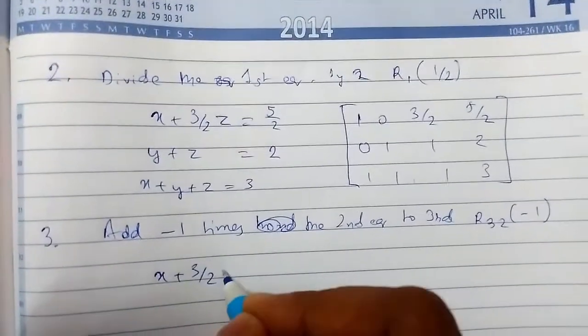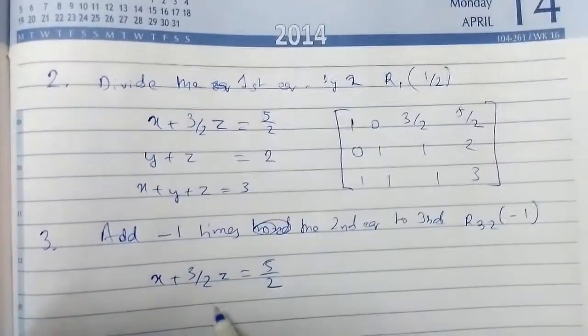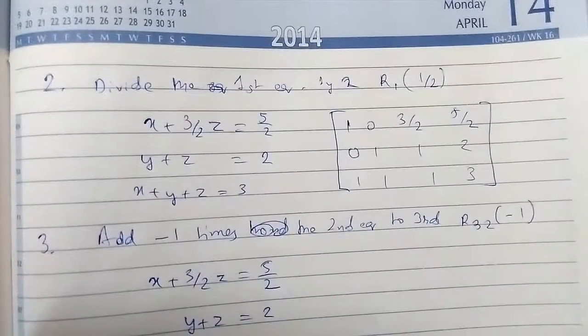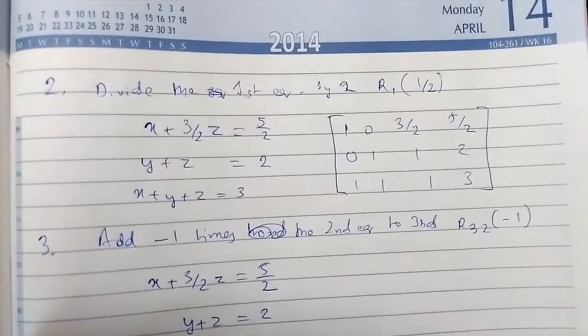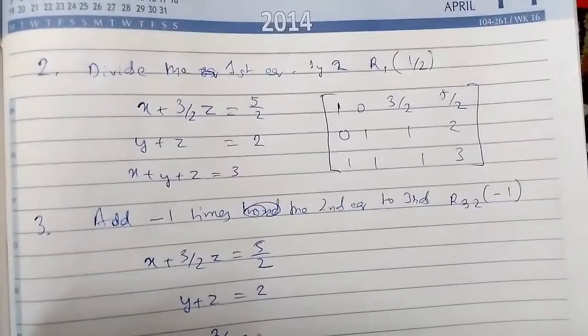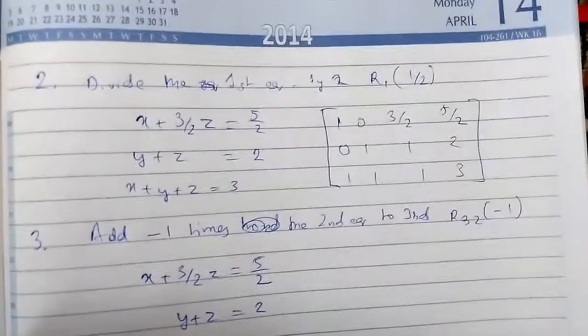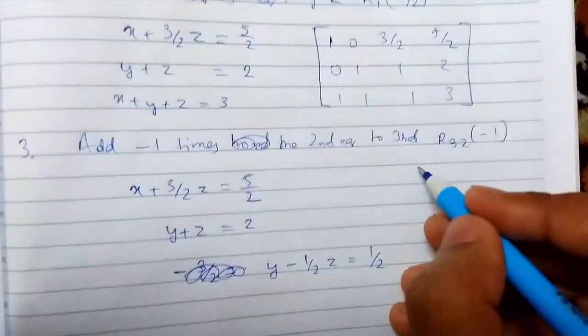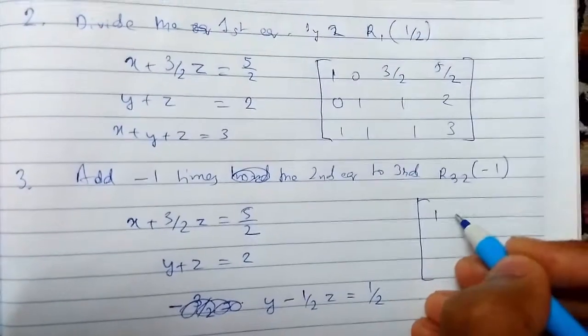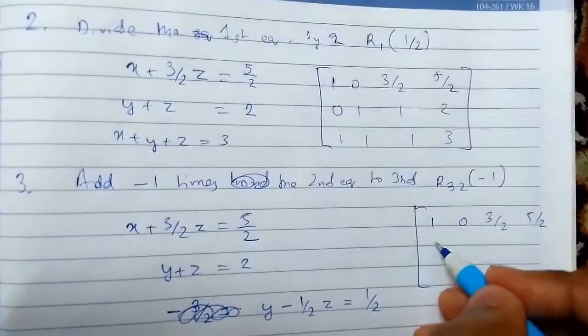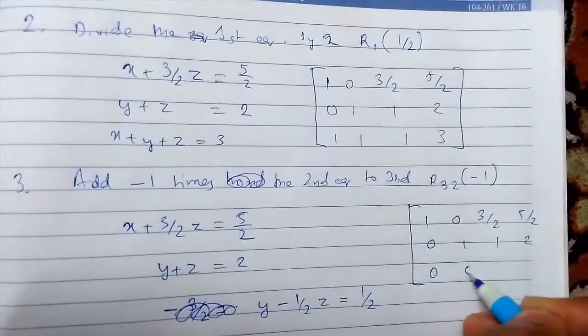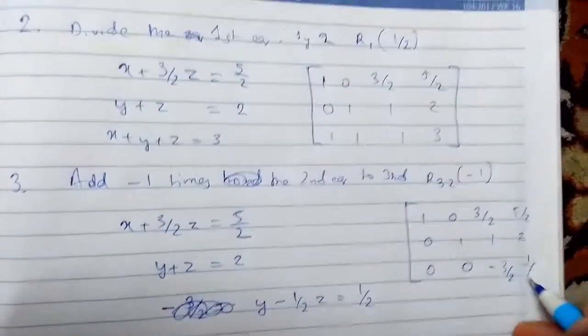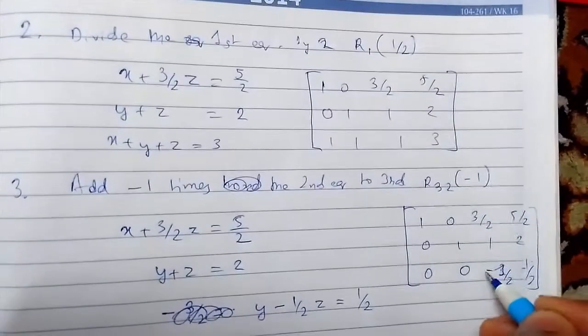The first equation remains unchanged. Second equation also remains unchanged. And we are basically just subtracting by this. So this will be Y minus 1/2 Z that equals to 1/2. Now just write the augmented matrix: 1 0 3/2 5/2, 0 1 1 2, and 0 0 minus 3/2 and 1/2.